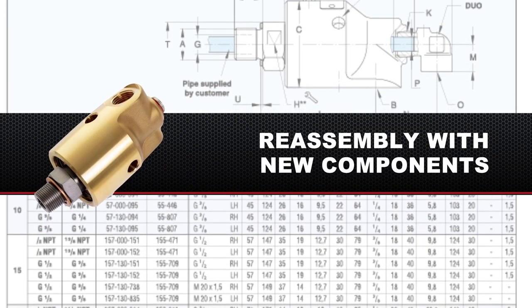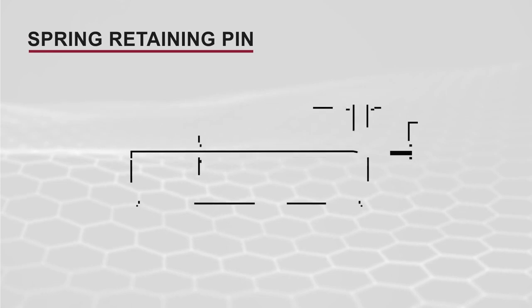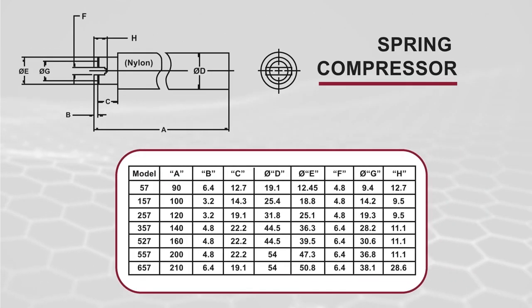Now the union can be reassembled with new components from the C kit. To assemble the replacement coil spring you'll need a spring retaining pin and a spring compressor. Refer to the chart for dimensions for your specific 57 series model.